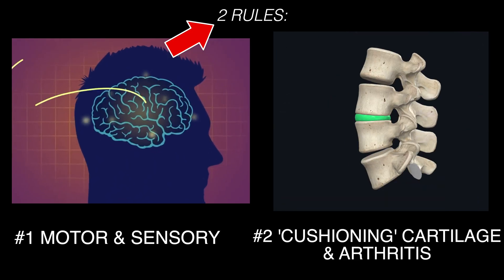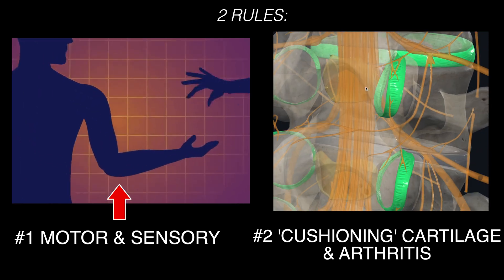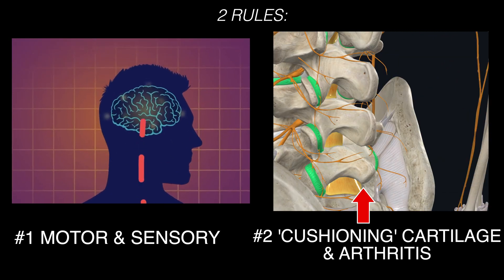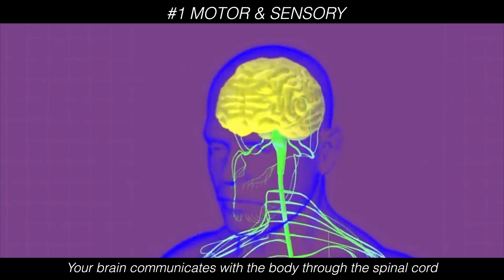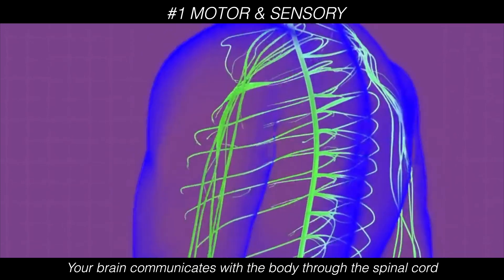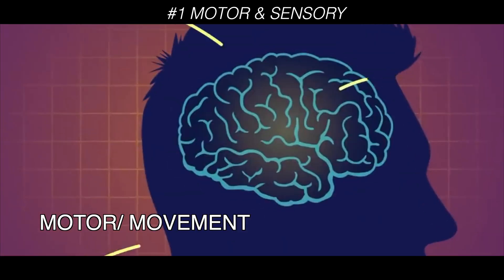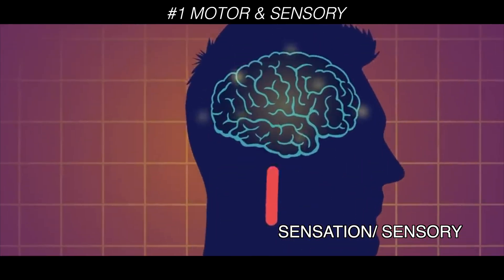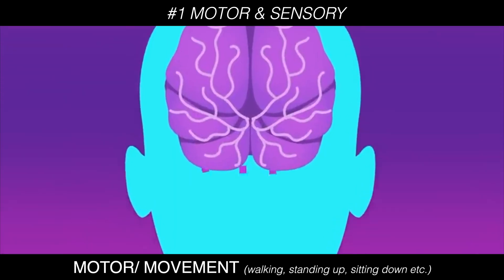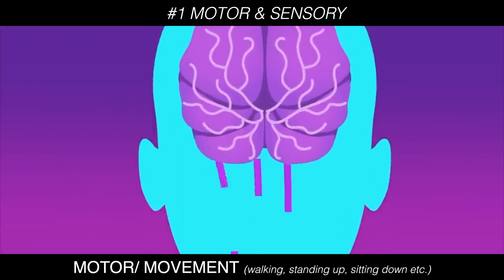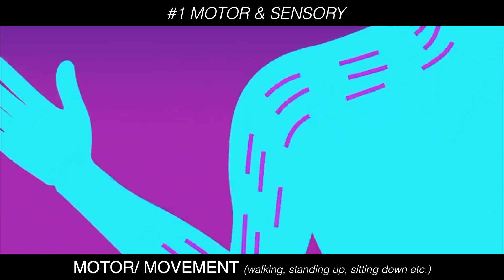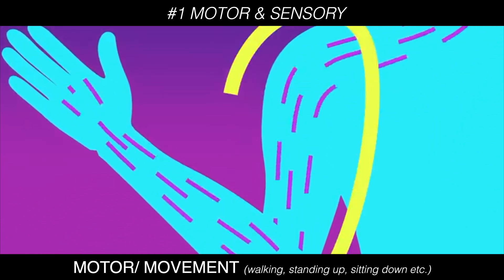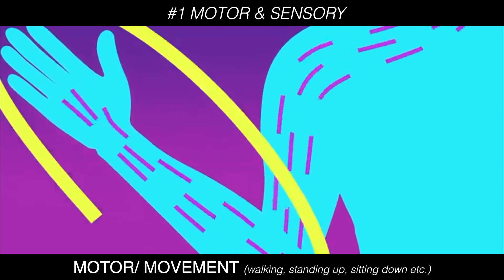We have to know two rules. Number one: motor and sensory. Number two: cushioning cartilage and arthritis. The brain communicates with the body through the spinal cord, and this includes all motor movement and sensation from our environment. Let's pretend you want to move your arm — within milliseconds, your brain sends a signal down the spinal cord to that specific body part, allowing it to move. This is called motor function.